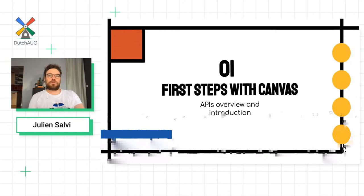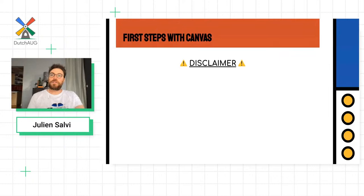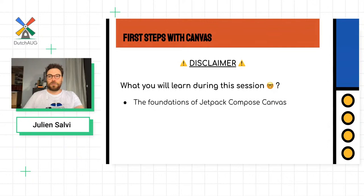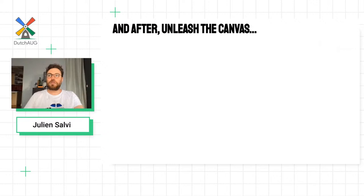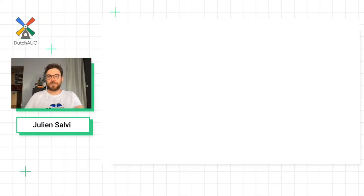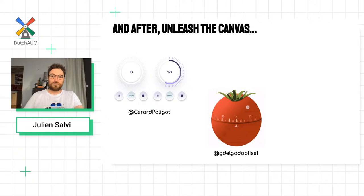Just before we start, a disclaimer about what you'll learn during this session. You'll learn the foundation of the Jetpack Compose Canvas, you'll have another view of the DrawScope API which allows us to draw shapes on the canvas, you'll have your first experience with animations on the canvas, and then you'll learn how to build custom shapes for your composables. After that, it's up to you — here are some samples I found on Twitter unleashing canvas capabilities.